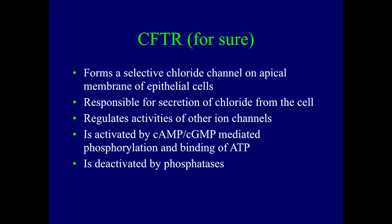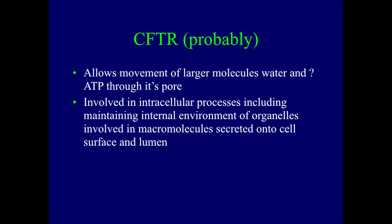CFTR is activated by cyclic AMP or cyclic GMP, and it's mediated by phosphorylation and binding of ATP. It's deactivated by phosphatase. It probably allows movement of larger molecules like water and ATP through the pore, and it's involved in intracellular processes, including maintaining the internal environment of various small organelles inside cells. All of these are going to be important to how well you do when you have cystic fibrosis.